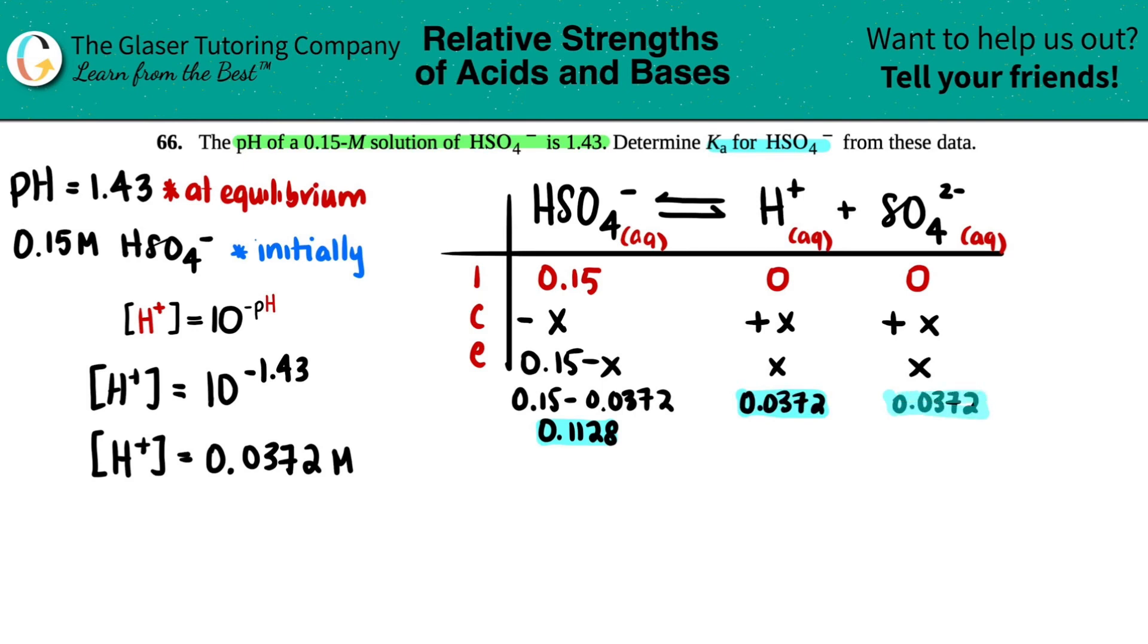Finally, we can use these to solve for Ka. The formula for Ka is always products divided by reactants. We've got two products. If you have multiple products in your Ka equation, it's always multiplying. So in this case, it's H+ times SO4 2- divided by HSO4-.